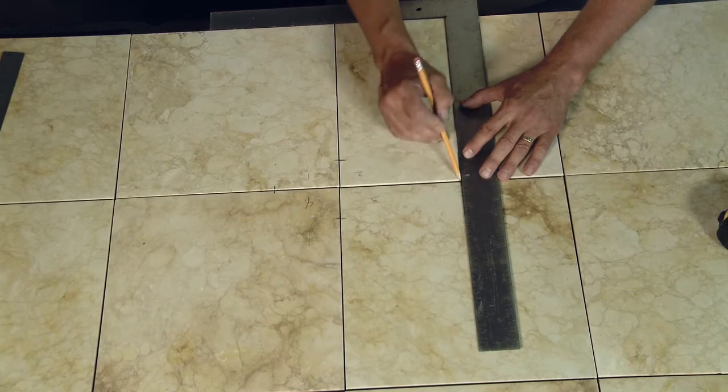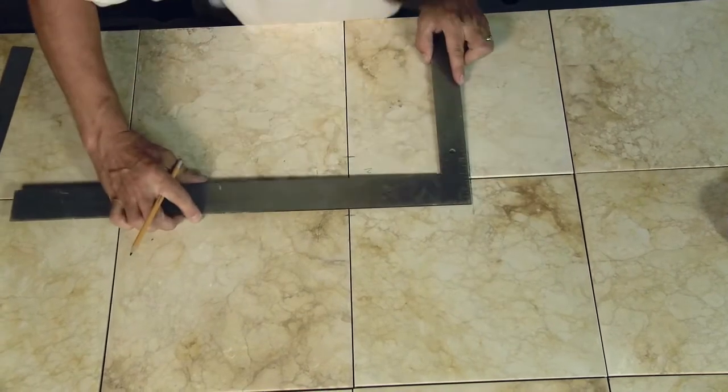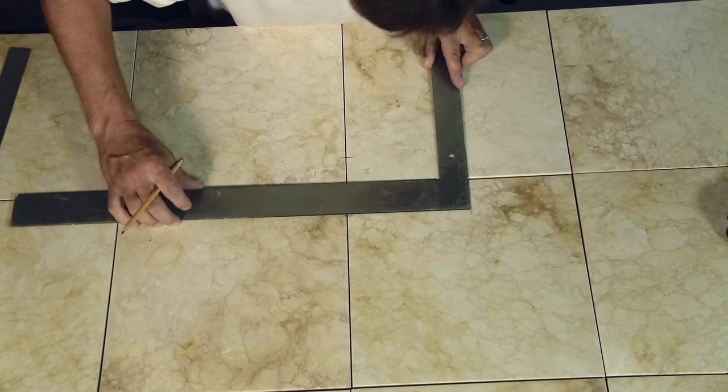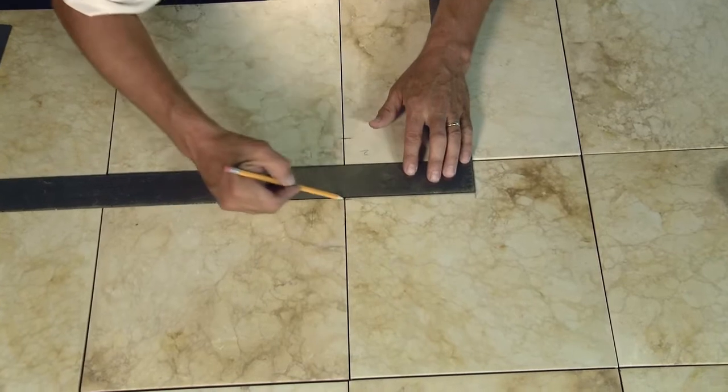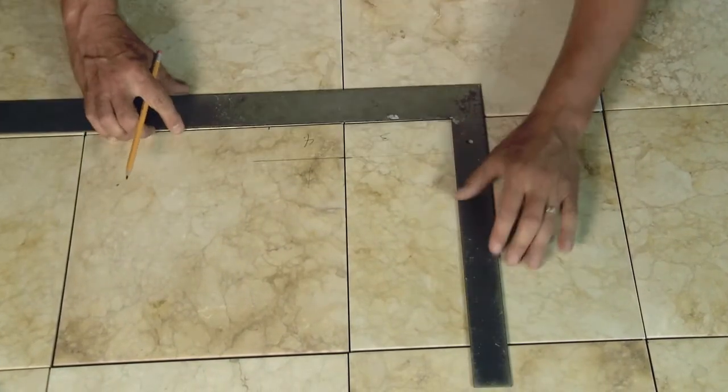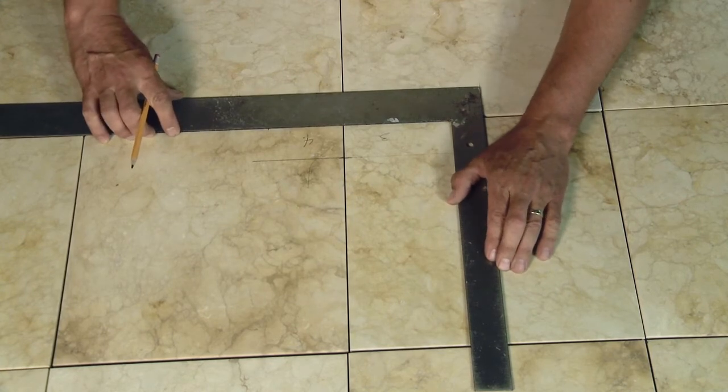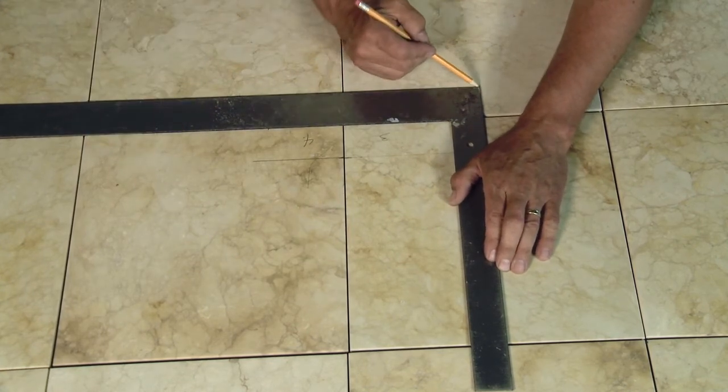The cutout will be a half an inch larger than the 4 by 10. All the way around you will end up with an opening of 5 by 11 which will allow a lip for our 4 by 10 vent to sit flush to the floor.